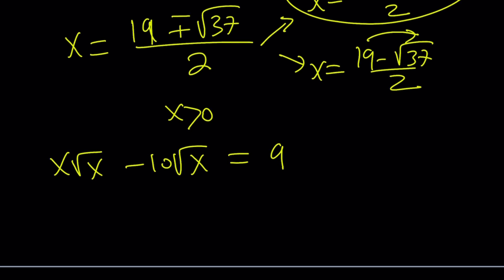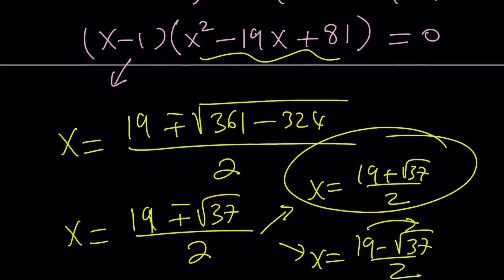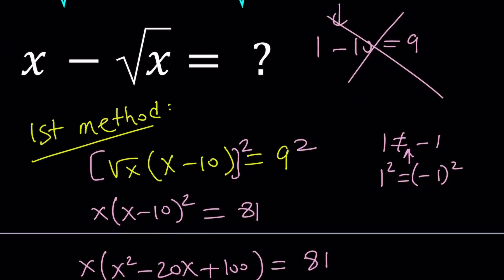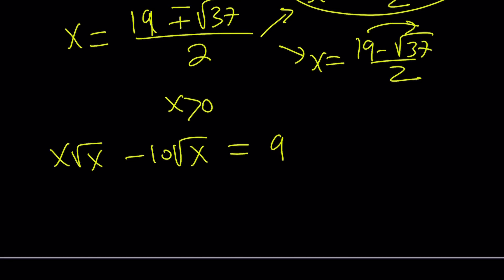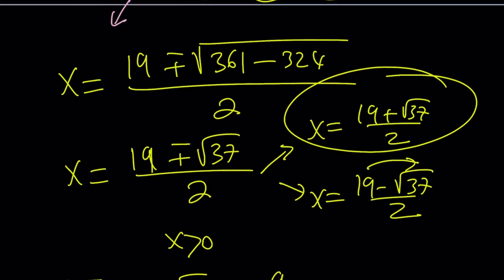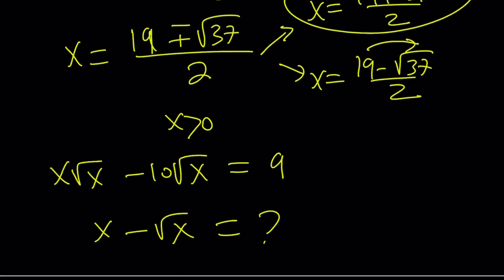So if you replace x with that, hopefully you should be getting 9. You don't need to check, that should work. But rather, plug it into the second equation. Our goal is to evaluate x minus root x. And we know that x is going to be replaced with that. So let's go ahead and do it.